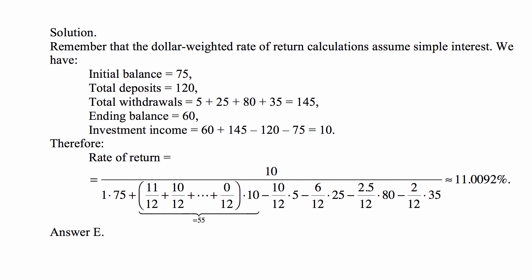The rate of return under the dollar-weighted method, assuming simple interest, is the net investment income divided by the weighted amounts. For the initial balance of 75, it's there for the whole year: 1 times 75. The first deposit is there for 11 out of 12 months, so 11/12 times 10; the second deposit for 10 out of 12 months, and so on. The last deposit is there for 0 out of 12 months.